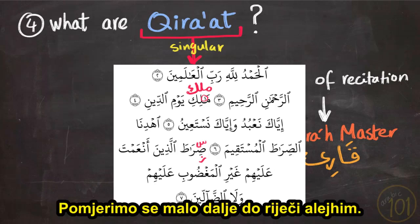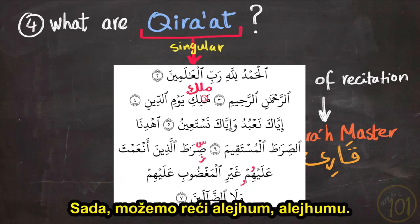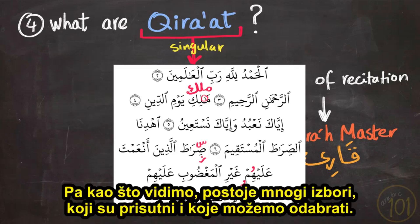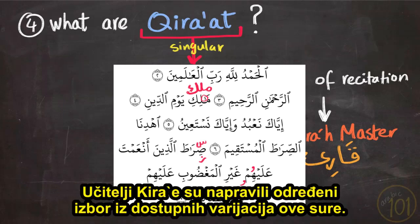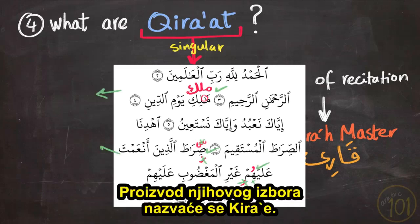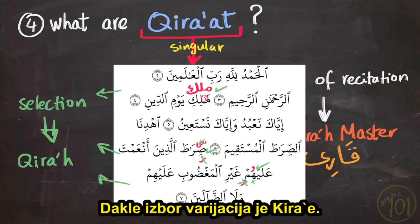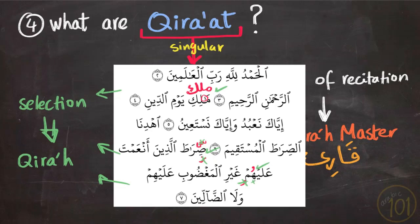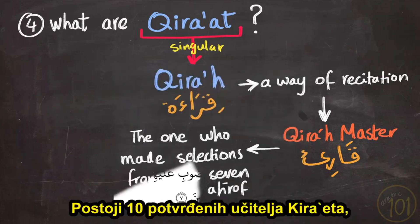Moving on, for the word 'alayhim,' we can say 'alayhum' or 'alayhim.' As we can see, there are many choices available. The qira'a master has made certain decisions and will choose from these available variations of this surah. The product of his selections will be called a qira'a — so a selection of variations equals a qira'a.